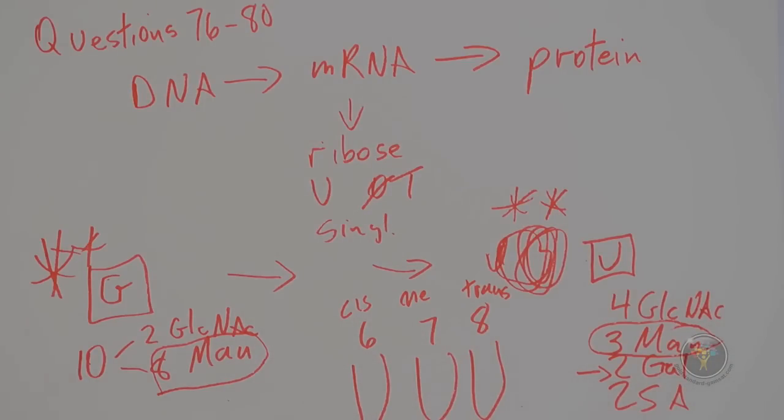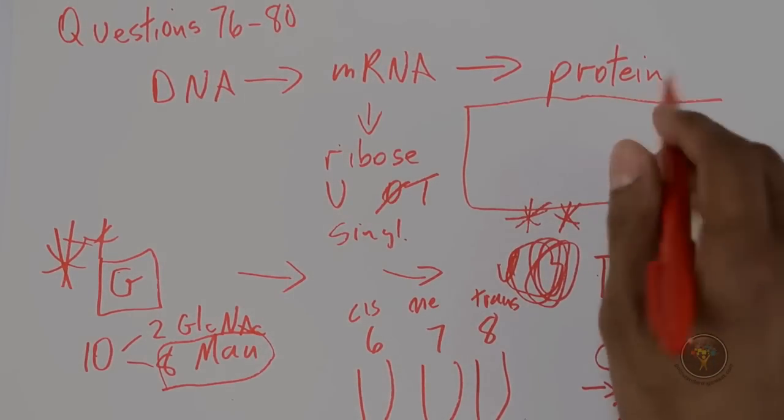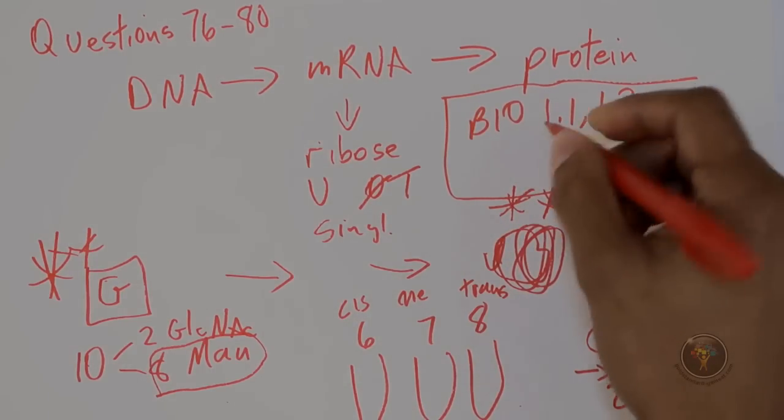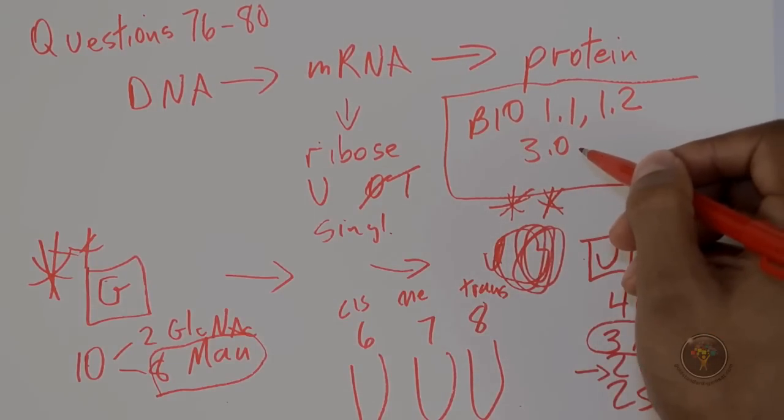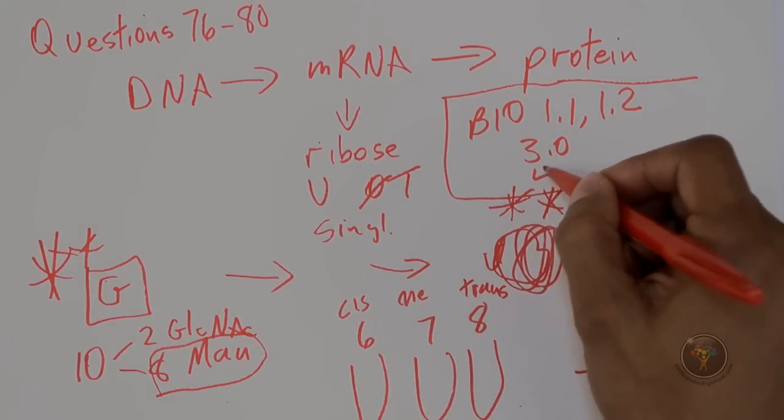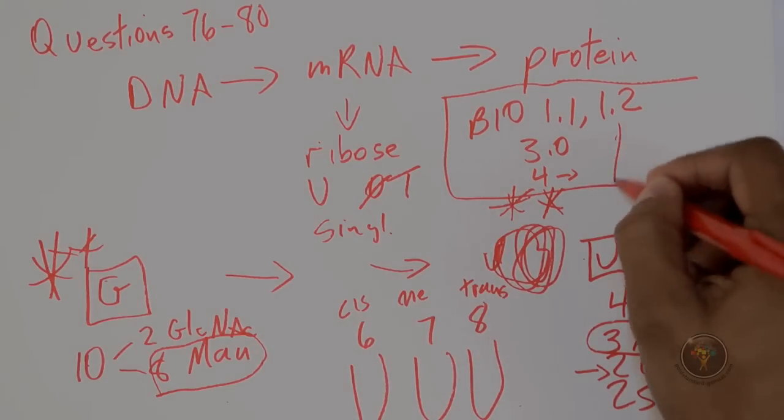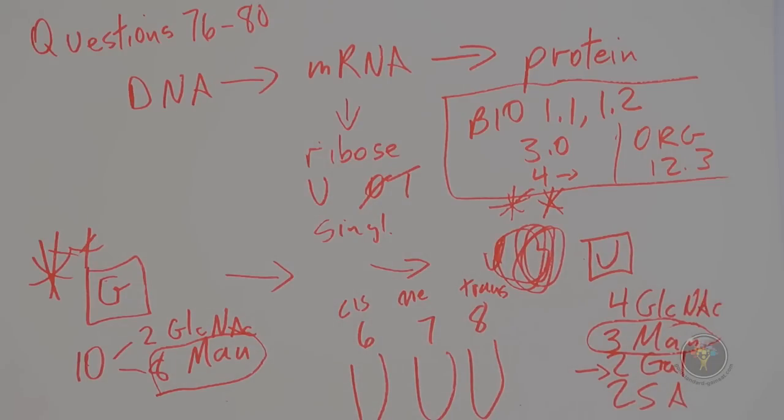So that's, that gives us the answer choice D, where seven is the medial one. Test tube number nine was empty, so that was pretty easy. So anyway, if you want to do some review with the book, you can look at Bio 1.1 and 1.2 for the cell, for the eukaryotic cell. Three is protein synthesis, that will be a review of that. And then Chapter 4 is good to review both enzymes and for bioenergetics. And finally, Org 12.3 for carbohydrates and glycosidic bonds and things of that nature.